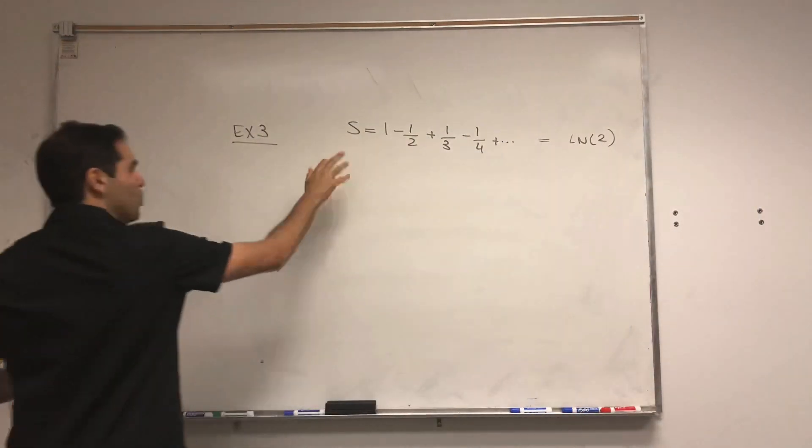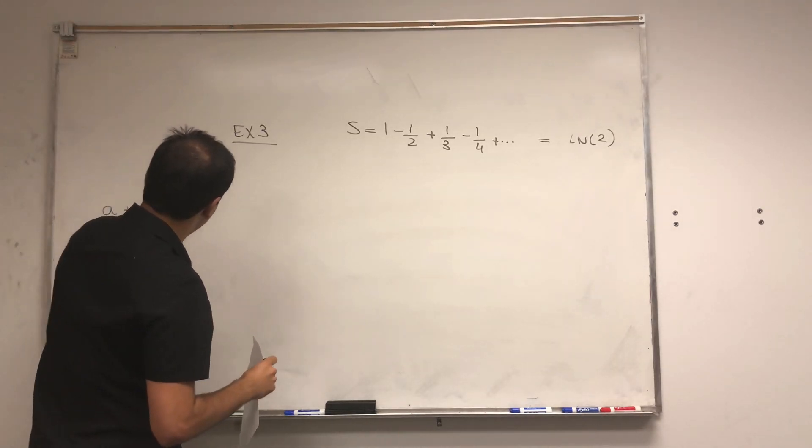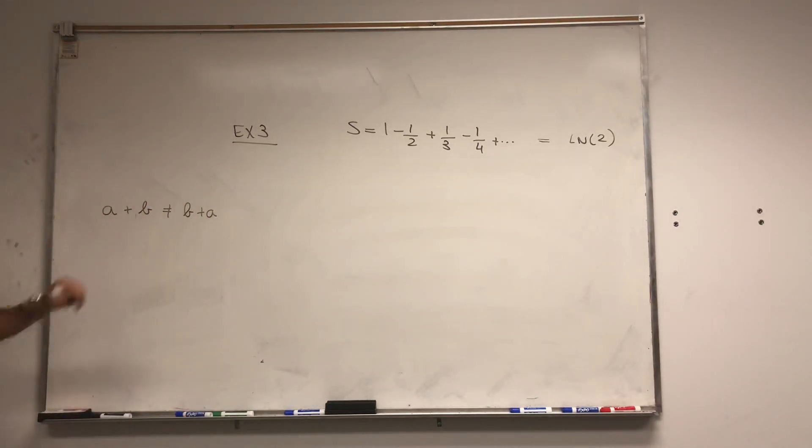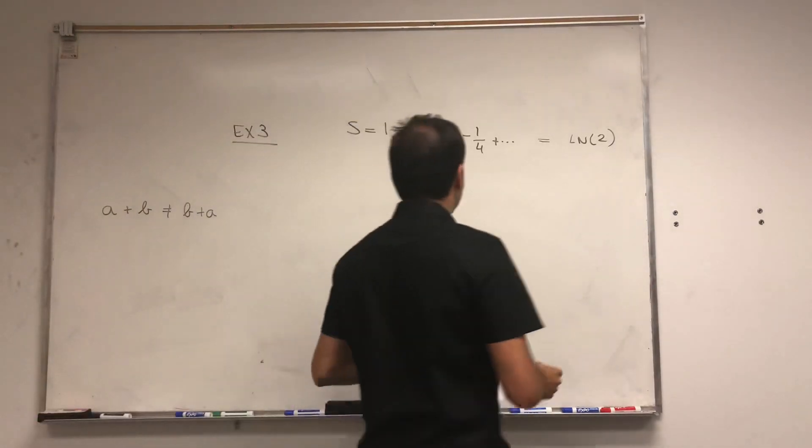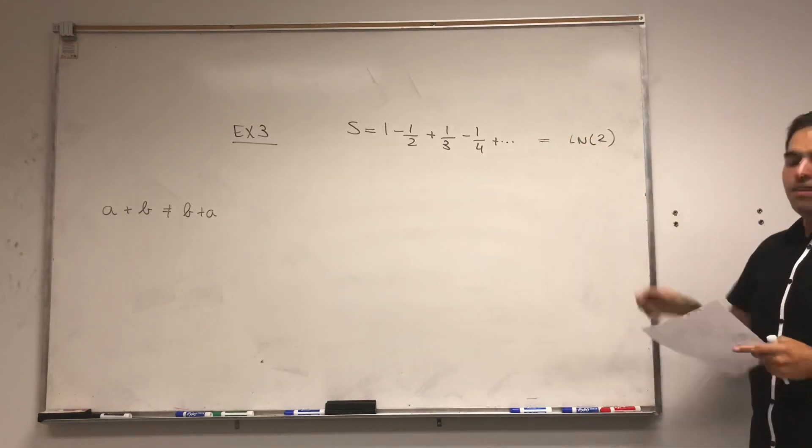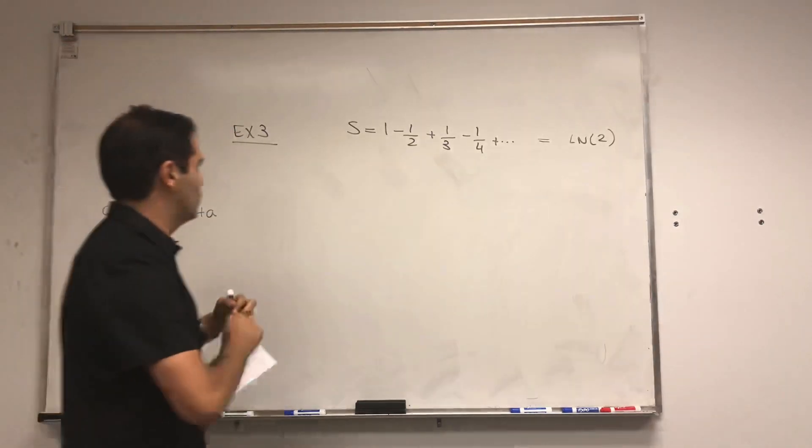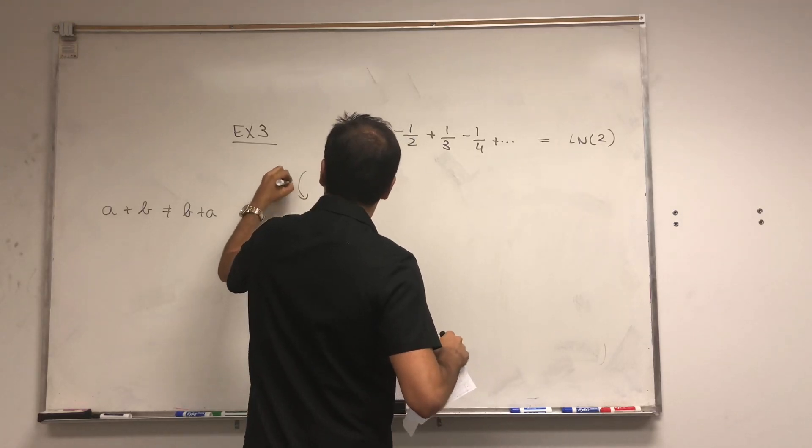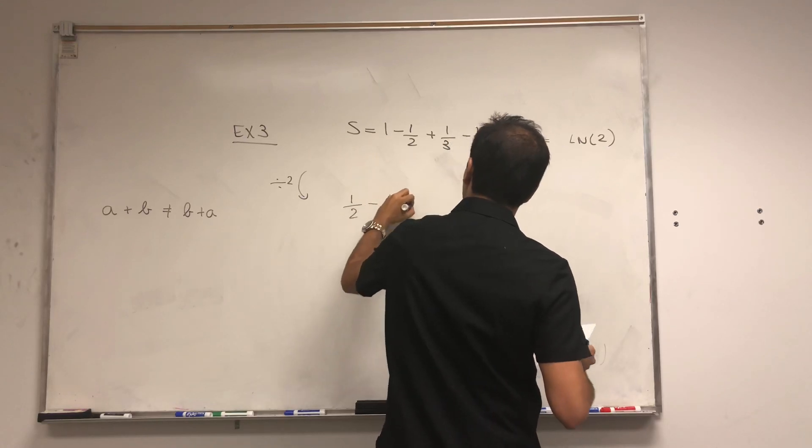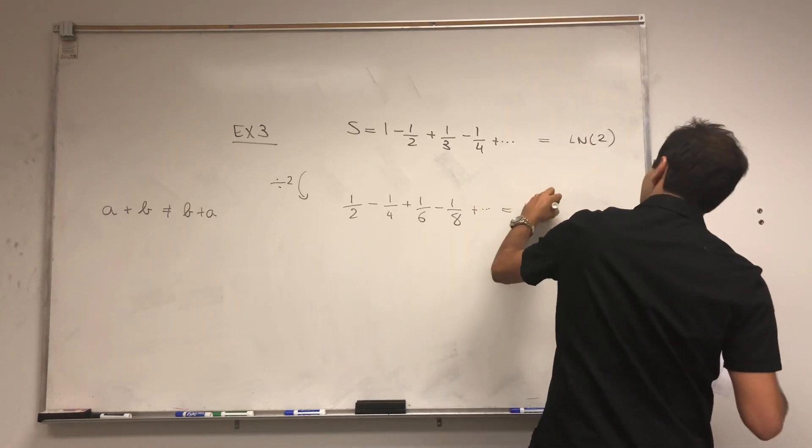And what I want to show you in this example is that commutativity is not necessarily true even for convergent series. So I want to show you that a plus b is not b plus a, in the sense that I will rearrange the terms of this series and get a completely different answer. So on the one hand, we can take the series S and divide it by 2. Then we get 1 half minus 1 quarter plus 1 sixth minus 1 eighth plus dot dot dot equals to ln of 2 over 2.